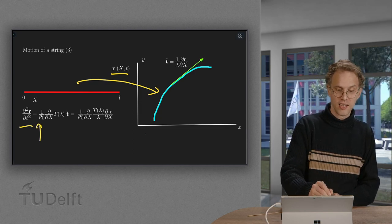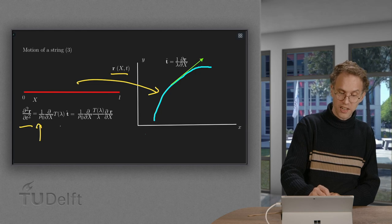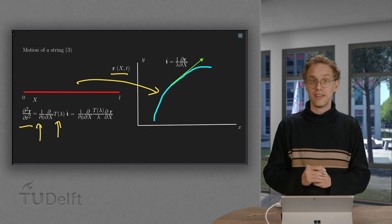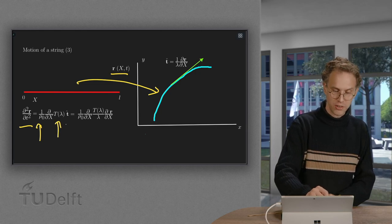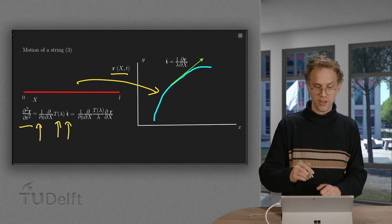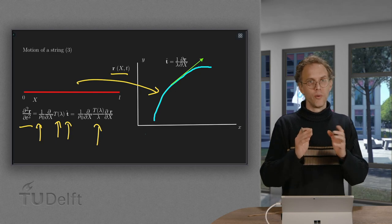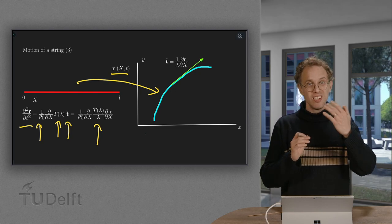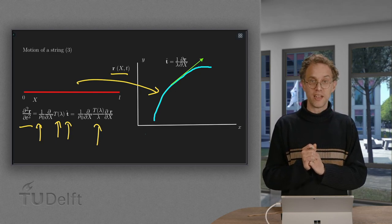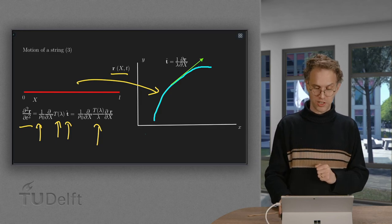Times the dx of t lambda, which is not so fine, times the unit tangent, which can be rewritten as t lambda over lambda times the dr dx. Well, dr dx is fine, but the t lambda over lambda is a big mess. So we want to make some simplifying assumptions.